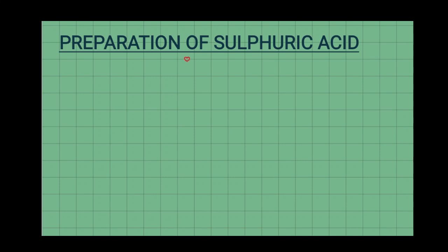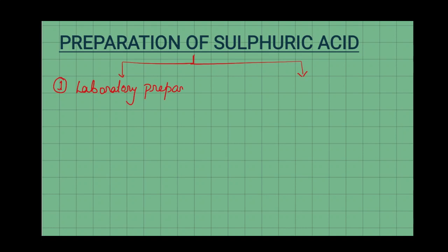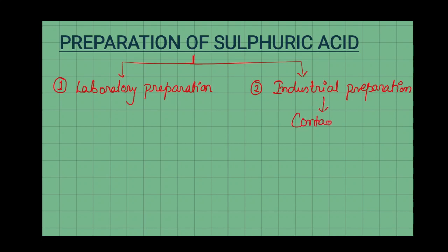We will discuss that sulfuric acid preparation is done in two ways. First is laboratory preparation, and second is a very important one — commercial or industrial preparation — whose particular name is the Contact Process.